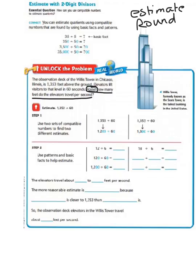So then, step two, it says, use patterns and basic facts to help estimate. So we know that 12 divided by 6 equals 2. We know that 120 divided by 60, because the zeros cancel out each other, also equals 2. We know that 1,200 divided by 60, we take the zero off each one. We know that leaves us with 20, because we still have one zero left.